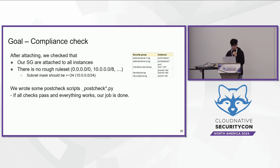During the build, simulation, and apply loop of security groups, our goal is to achieve some level of compliance. We first verify that our security groups are correctly attached to all instances, then check that there are no rogue rulesets and that all subnet masks in the ruleset are fine-grained enough. We wrote some post-check scripts to help verify these requirements. If all checks pass and everything works, our job is done.